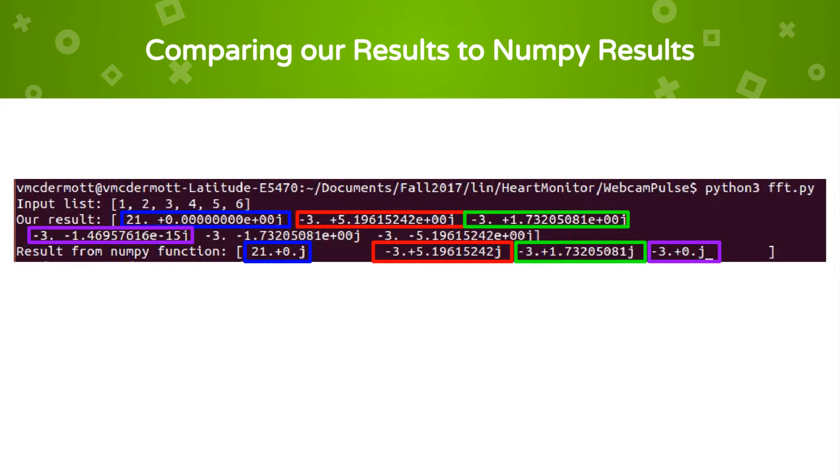Because the complex conjugates have the same magnitude, adding them or leaving them out should not change our results of the application, but they are extraneous. Also, as can be seen from the purple result, NumPy rounds off to a certain number of decimal places and calls negative 1.469, etc., times 10 to the negative 15, 0, whereas our function specifies the result in full. Again, this should not affect the performance of the application with our function.